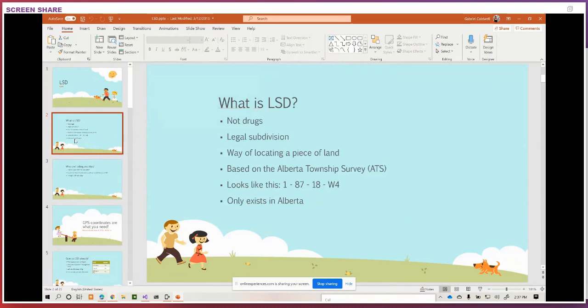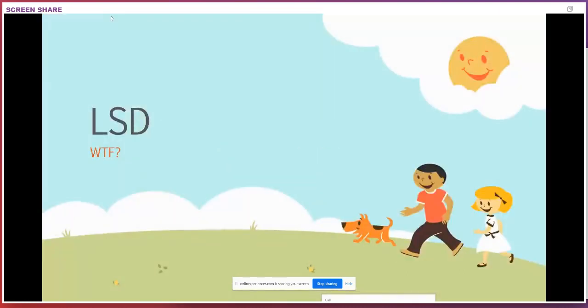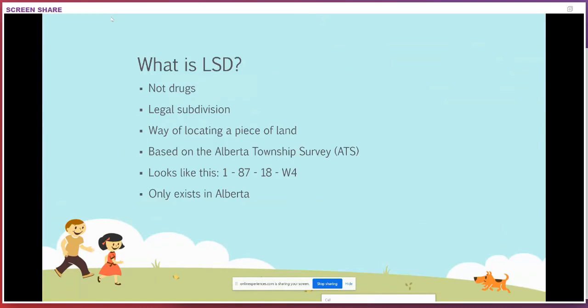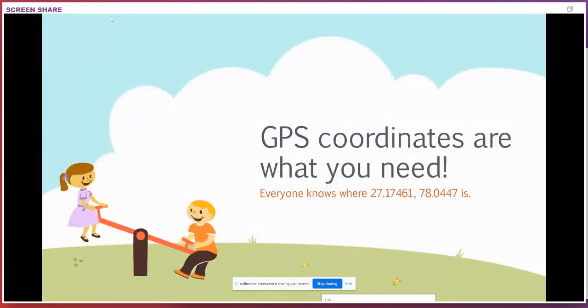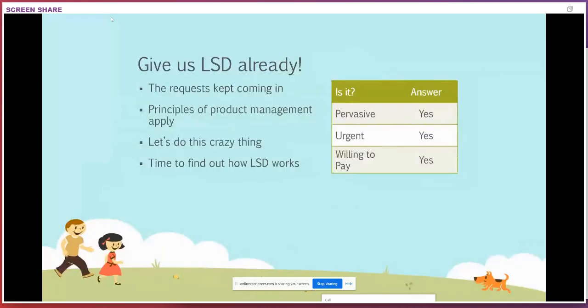We thought, why would you want LSD? Everyone in the world uses latitude and longitude. But people kept asking for it and asking for it, and after a while you say okay, maybe we should give it to them. I looked further into it and found some interesting things. At first I thought, you don't want ATS, you want GPS coordinates — you want latitude and longitude. Like, everyone knows where 27.17461780447 is, right? But it was a pervasive, urgent problem and the customer was willing to pay for it, so we thought let's figure out how this thing works.